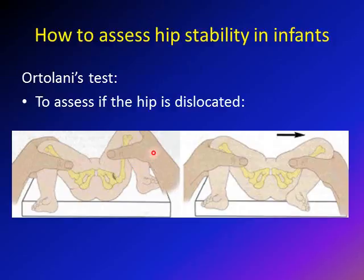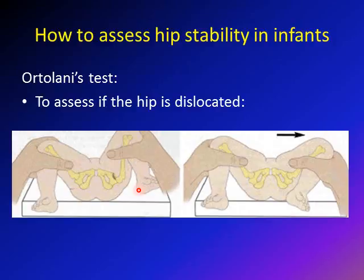To perform the Ortolani maneuver, hold the infant's extremity in your hand with the thumb on the medial aspect and the other three fingers on the lateral aspect. Then bring the extremity outward into abduction. If the hip is out, it should come in. A positive result is a clunk — not a click. A click is a normal or equivocal finding. A clunk means the whole hip is coming in and out of the socket, with a suction sensation.